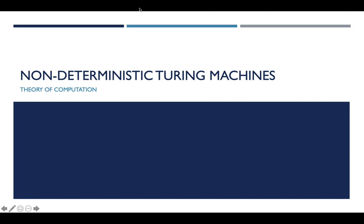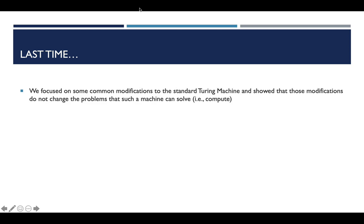So this first one we're going to talk about is non-deterministic Turing machines. Non-determinism is certainly a concept that we have looked at in the past, but we're going to look at it from the perspective of Turing machines. So in the last video, what we did is we looked at a whole bunch of common modifications to the standard definition of a Turing machine.